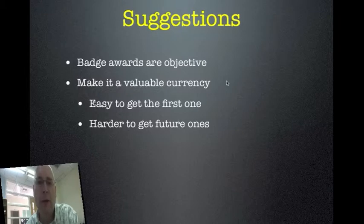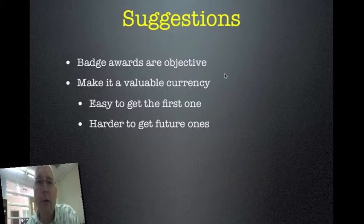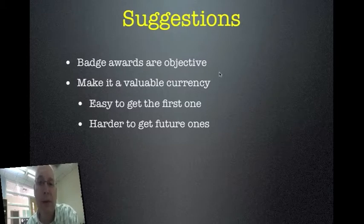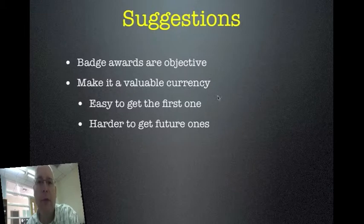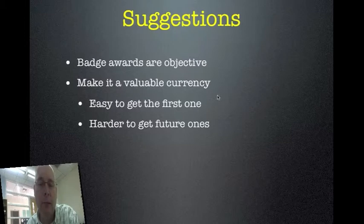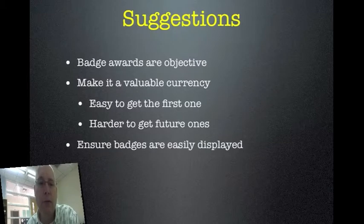Think about the military — the Congressional Medal of Honor, the number one badge. You have to do an incredible number of things to get it, very few people receive it, and in fact most get it posthumously. When it's given, it's a big deal and makes the news. Same thing with your badges: if you have one or two that are really hard to get, in addition to easier ones as kids level up, it'll make it that much more interesting for them.